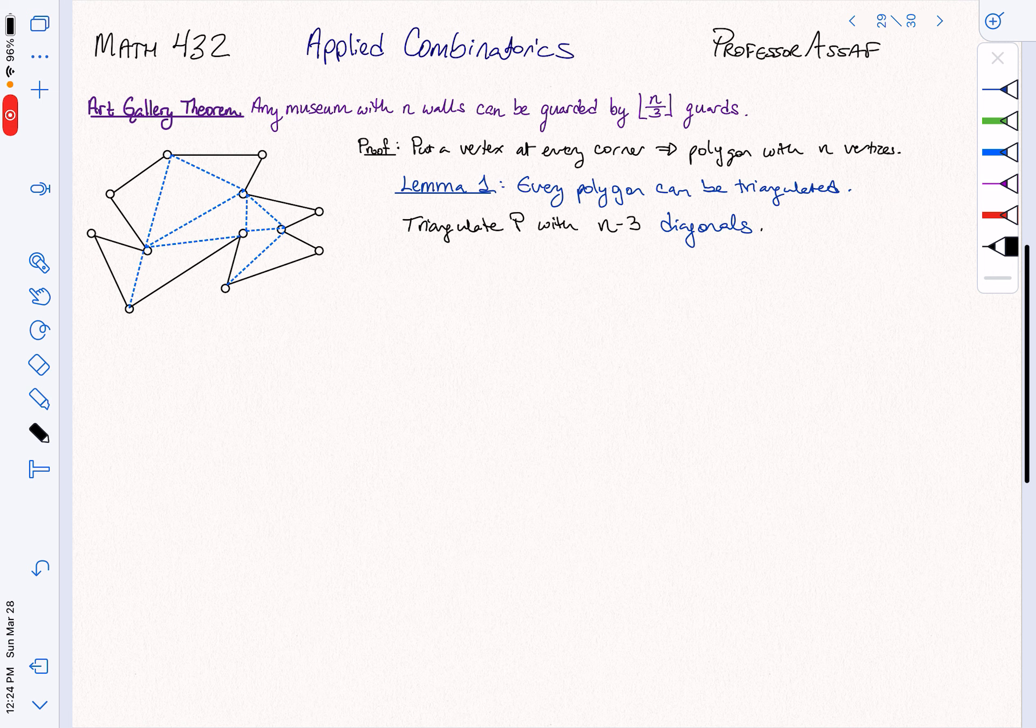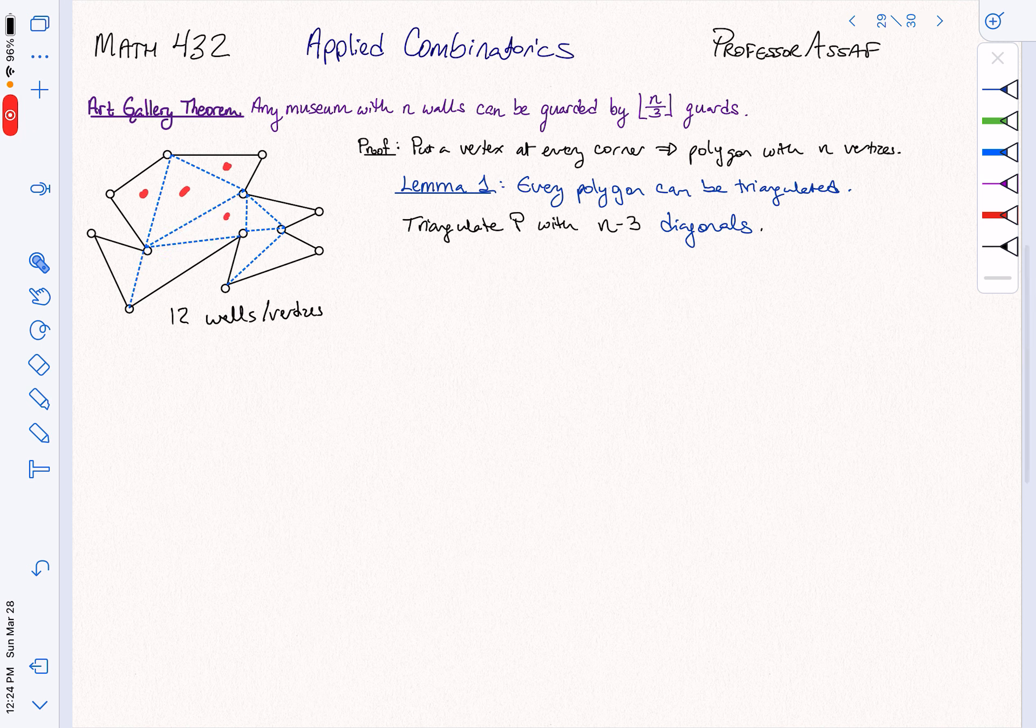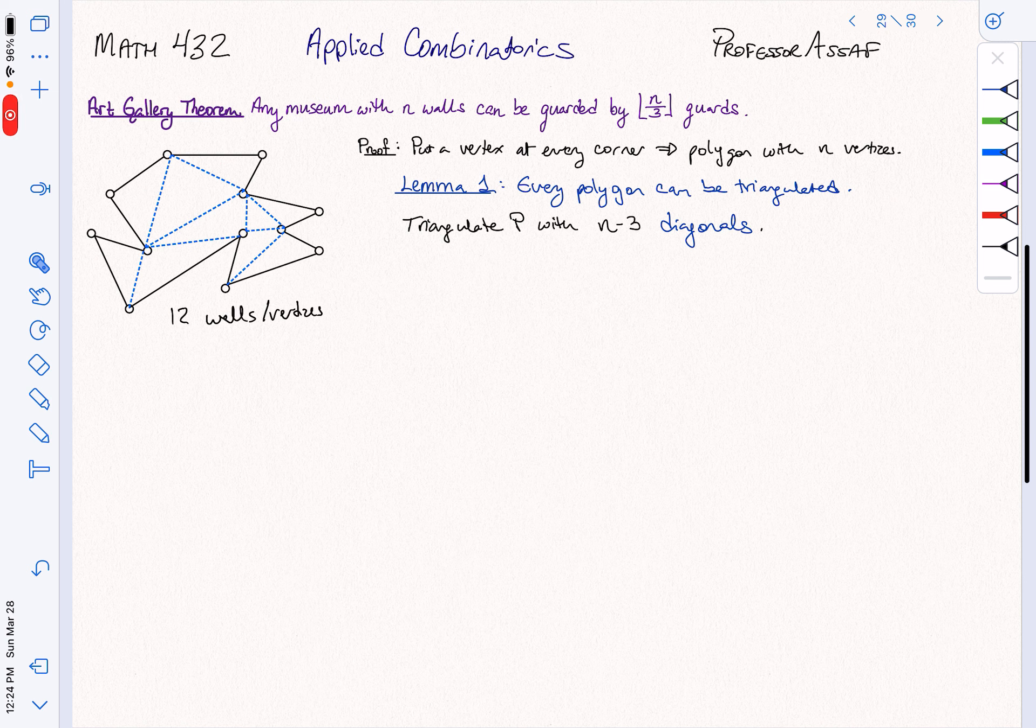So here's our example. We have 12 walls. And what we've done is we've thought of this room as a polygon with 12 vertices. And by the lemma we proved last time, we know that we can triangulate this polygon. And a triangulation is just putting interior diagonals inside the shape until every face that we have is a triangle. That's great. But we know that we put in n minus 3 diagonals. We know that we have n minus 2 triangles.